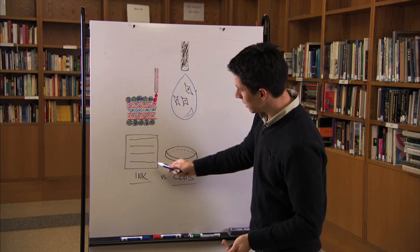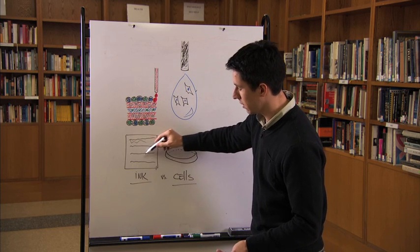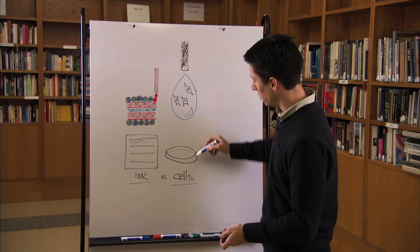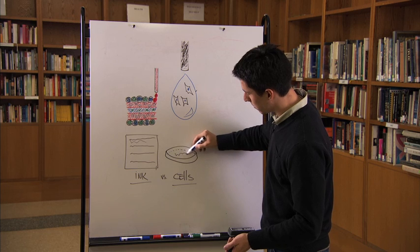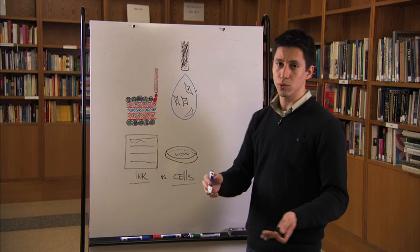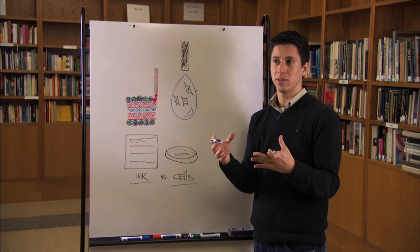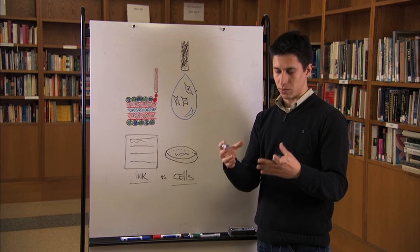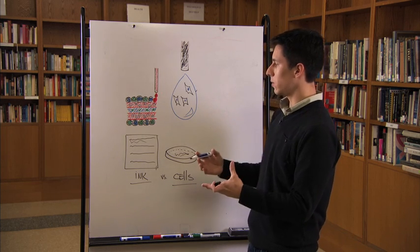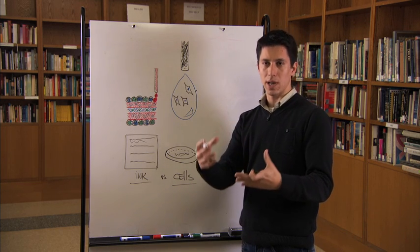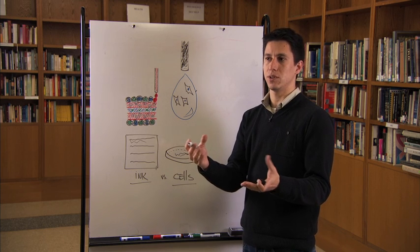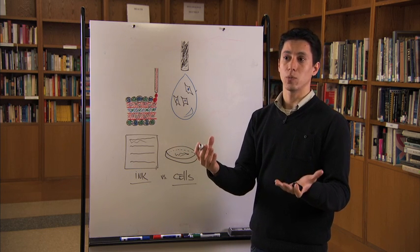So instead of having a piece of paper where you're printing like a Word document, we have cells which we print in a petri dish. We culture these cells, and by having control over the resolution of the printer, we can regulate the position of multiple cell lines and multiple layers of different tissues and create quite complex organs.